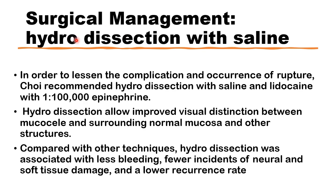When open surgical excision is performed, it is usually carried out by hydrodissection of the mucocele with saline containing lidocaine and epinephrine for local anesthesia. This is known to decrease complications and the rupture rate of the cyst. Hydrodissection allows improved visual distinction between the wall of the cyst and the surrounding tissue and normal mucous membrane. Compared with other techniques, hydrodissection is associated with less bleeding, fewer incidents of tissue or neural damage, and a lower recurrence rate.